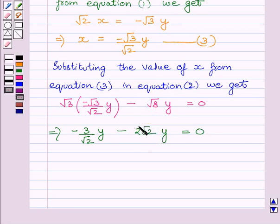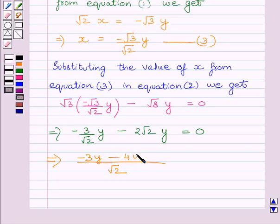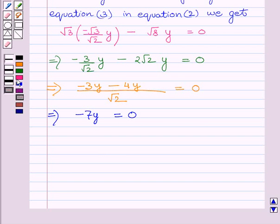Here root 2 is the LCM. Minus 3y minus 4y is equal to 0, which further implies minus 7y is equal to 0, or we can say y is equal to 0.